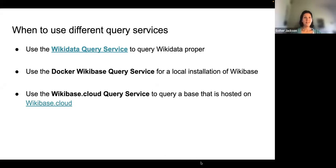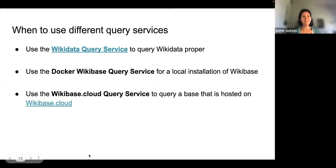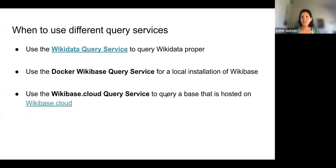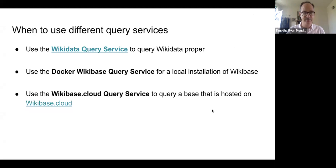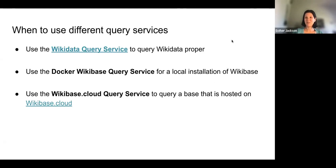I have to give thanks to Christine Fern-Eslau, co-author of this section and the Wikidata query whiz who put together our queries. I'll talk about query services — when you would use different ones and the differences between them. You would use the Wikidata query service to query Wikidata proper. The Docker Wikibase query service would be used for a local installation of Wikibase. The Wikibase Cloud query service would be used to query a Wikibase hosted on Wikibase Cloud. For our presentation, we are looking at the Wikibase Cloud query service.